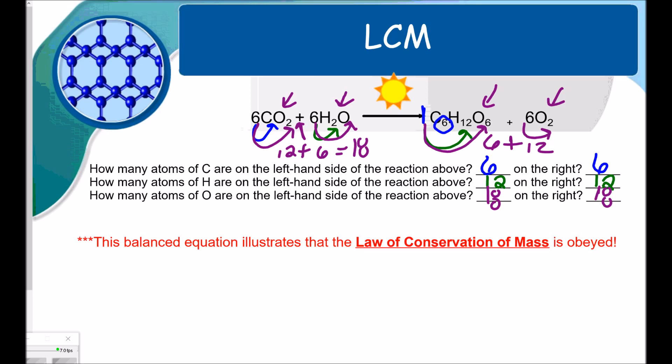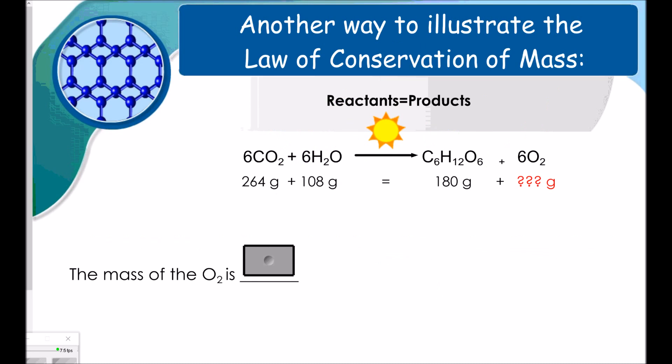So we can see that on the left and the right side, the number of atoms of each element are equal. It says, this balanced equation illustrates the law of conservation of mass. Another way to illustrate the law of conservation of mass is to show that the reactants equal the products. Literally, the mass of the reactants equal the mass of the products.